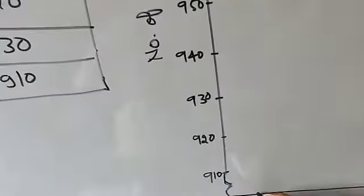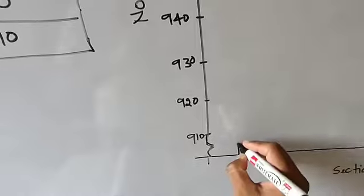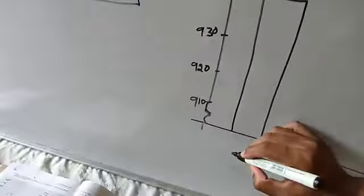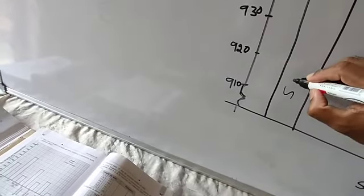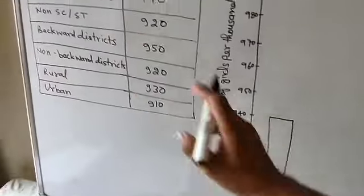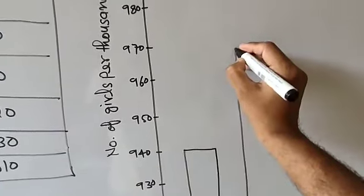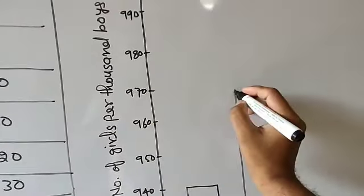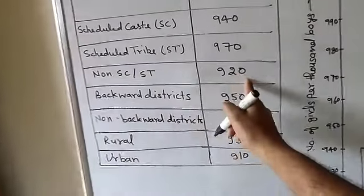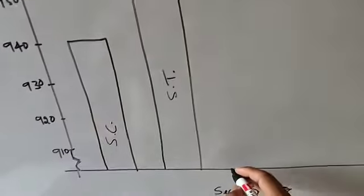The first value is 940 for Scheduled Caste. Leave one centimeter of space on the graph, draw the bar up to 940, and write SC below it. For Scheduled Tribe the value is 970, so leave a space, draw the bar up to 970, and write ST below it.